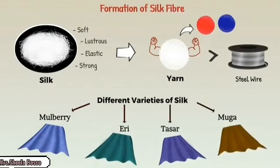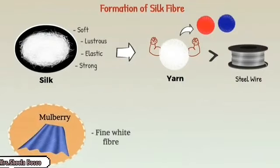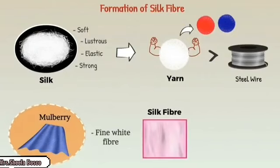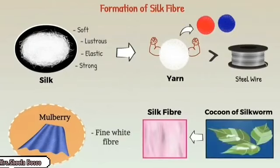Branded silk materials are mulberry, eri, tassar, and muga. These are all silk thread names. First we will take mulberry — it is very common and we will learn about it.